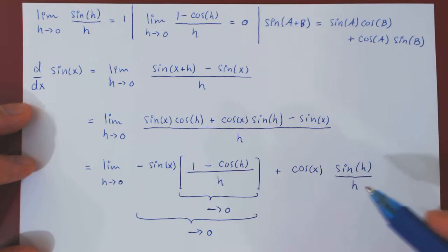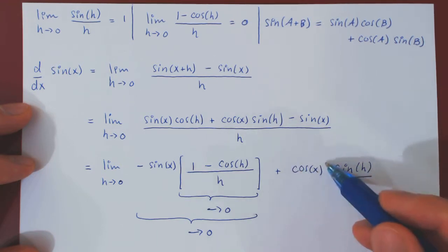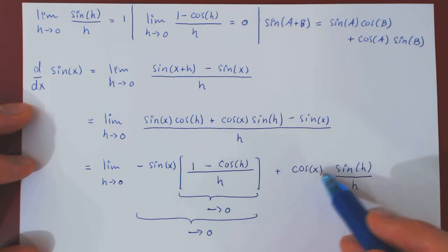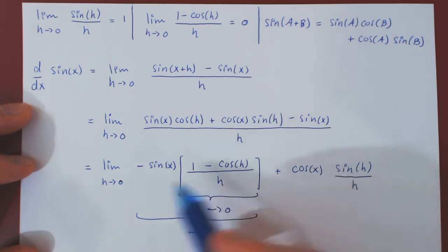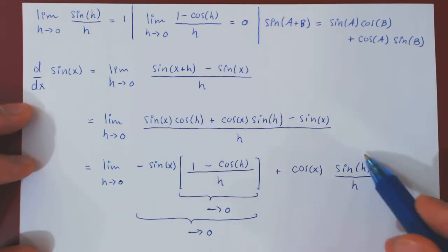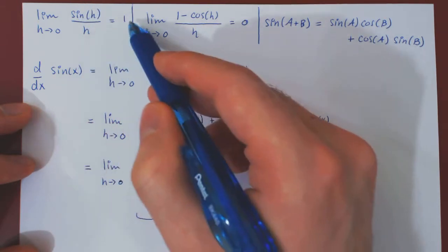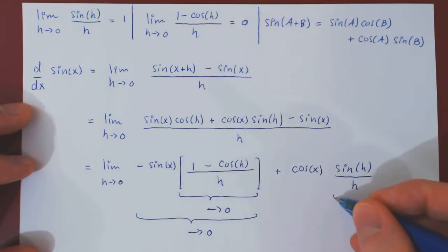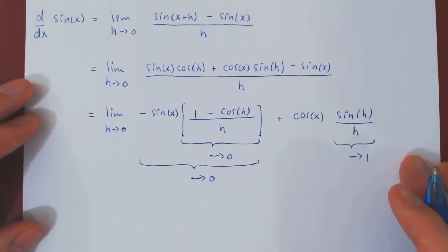What about the second term? Well, sin of h over h, once again, if we look at the cos of x, cos of x is a constant with respect to h. So, cos of x stays cos of x, but as h approaches 0, we know that sin of h over h approaches 1. So, this term approaches 1. So, now we're essentially done.